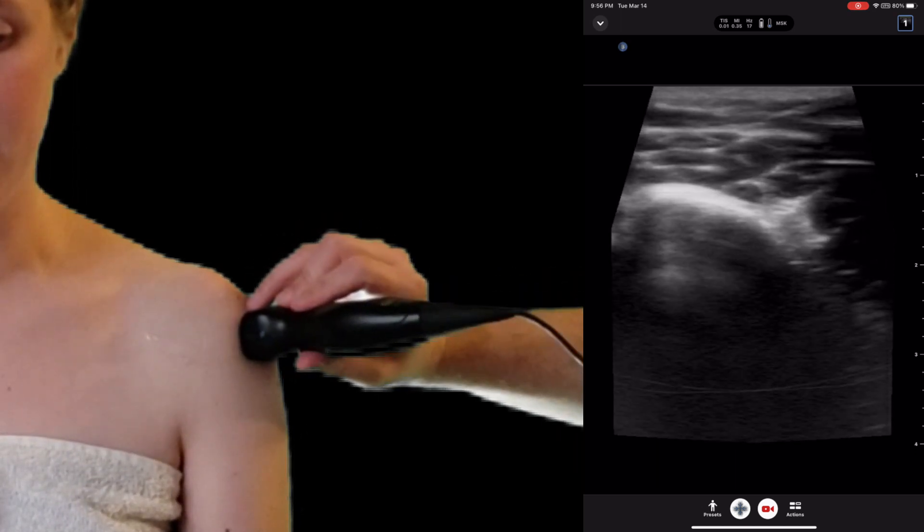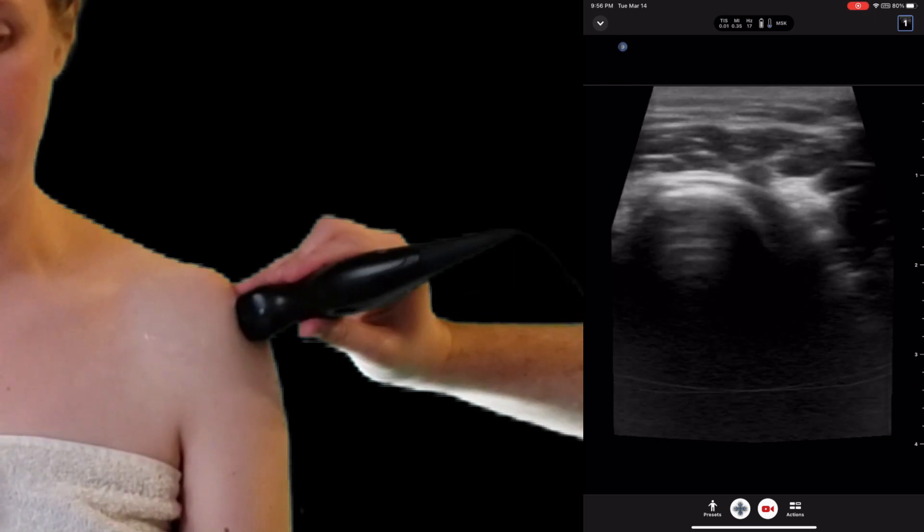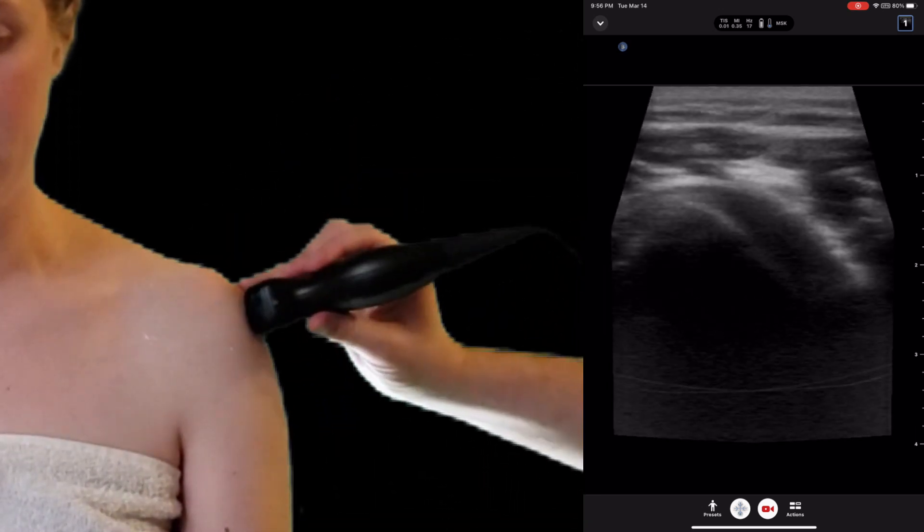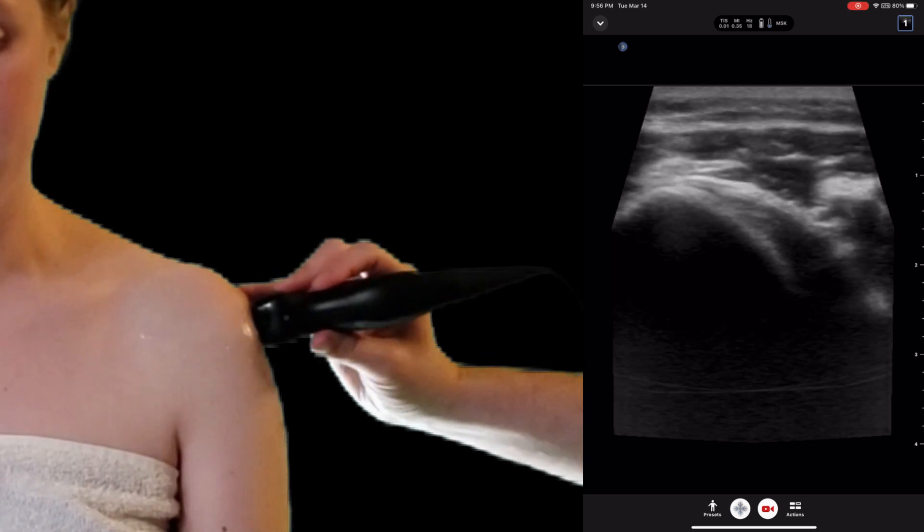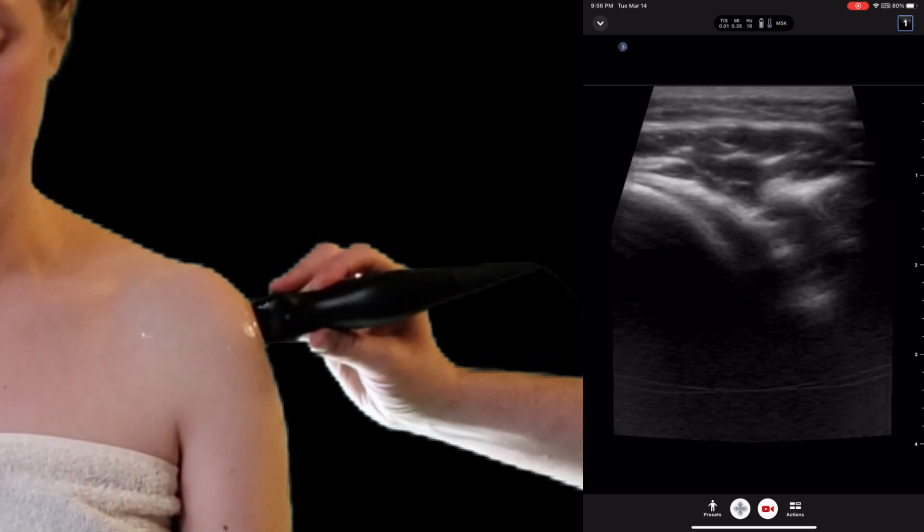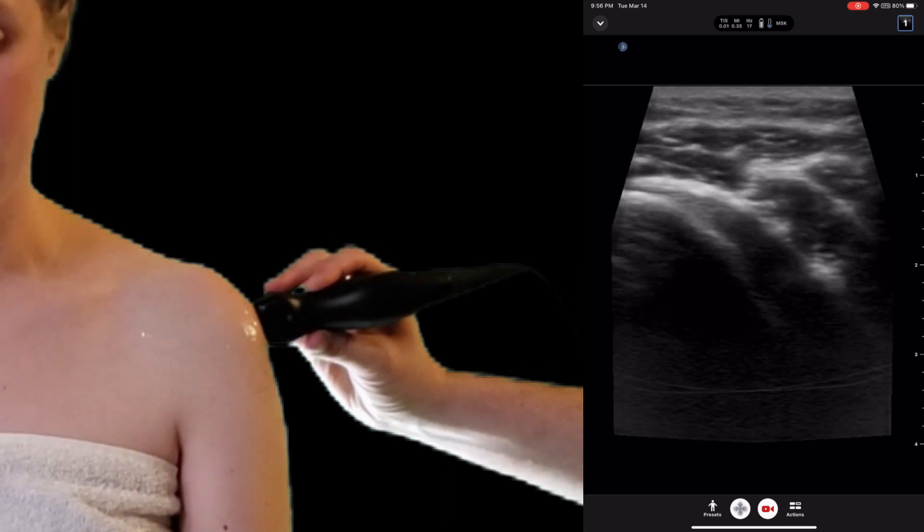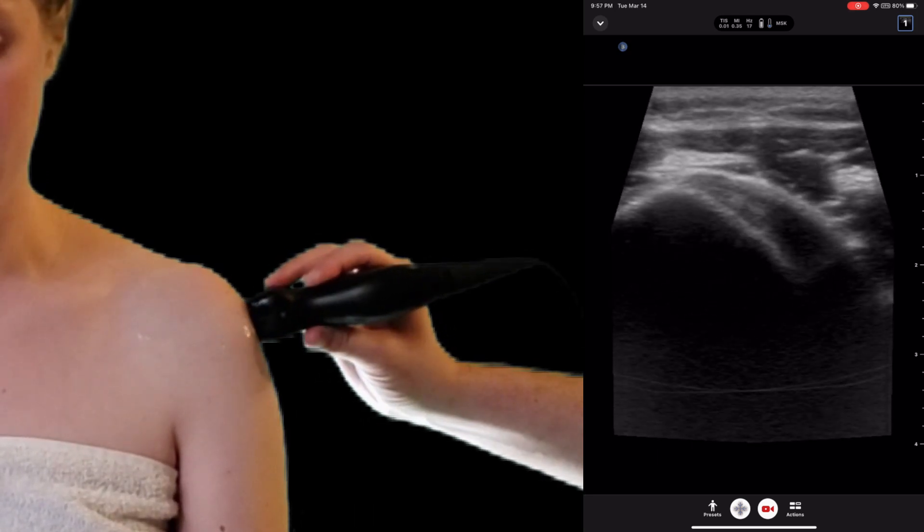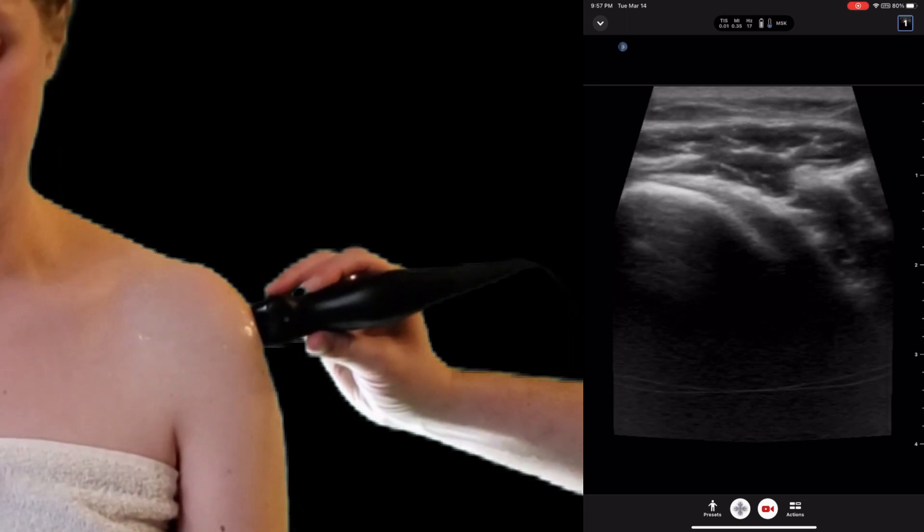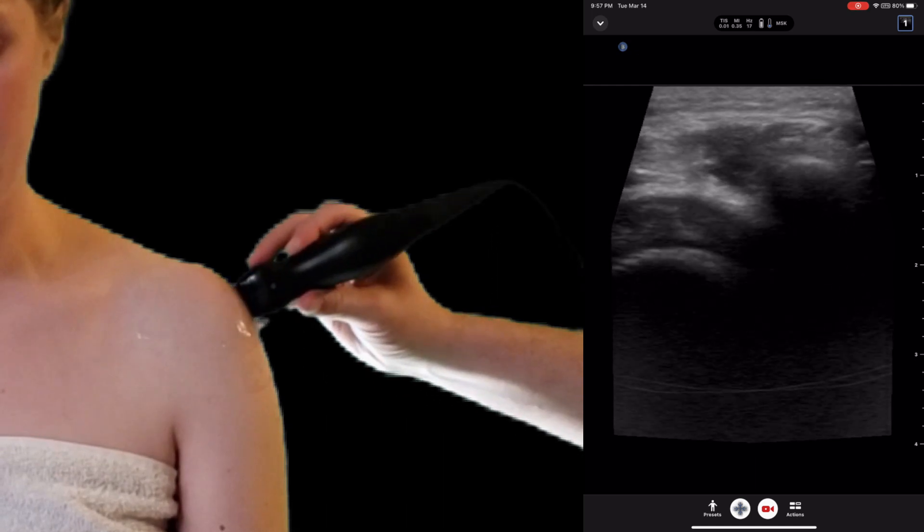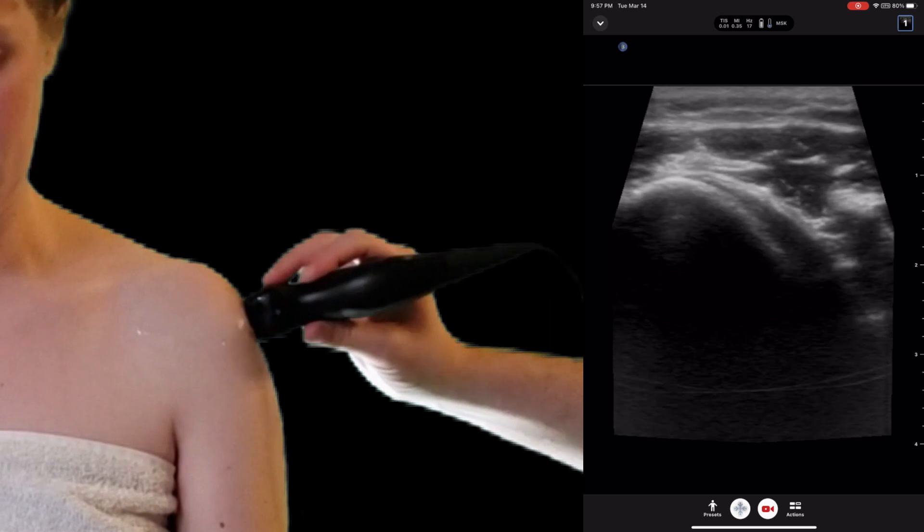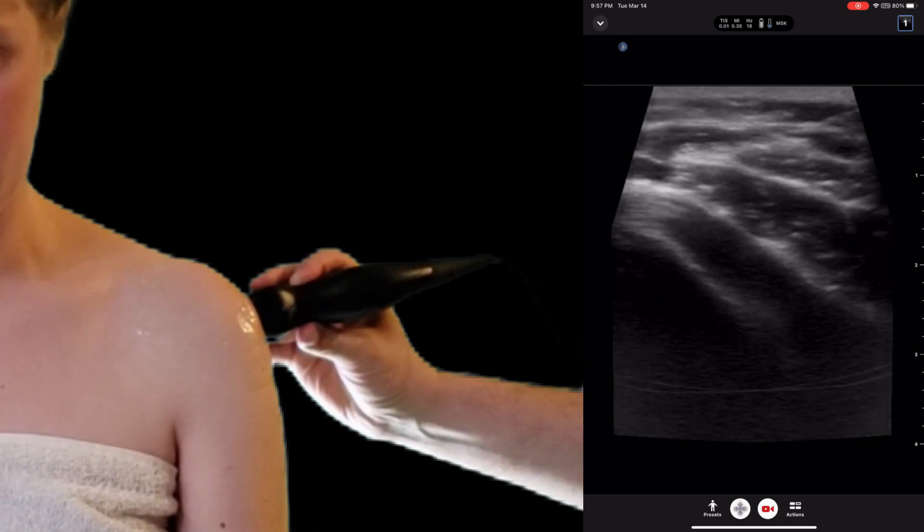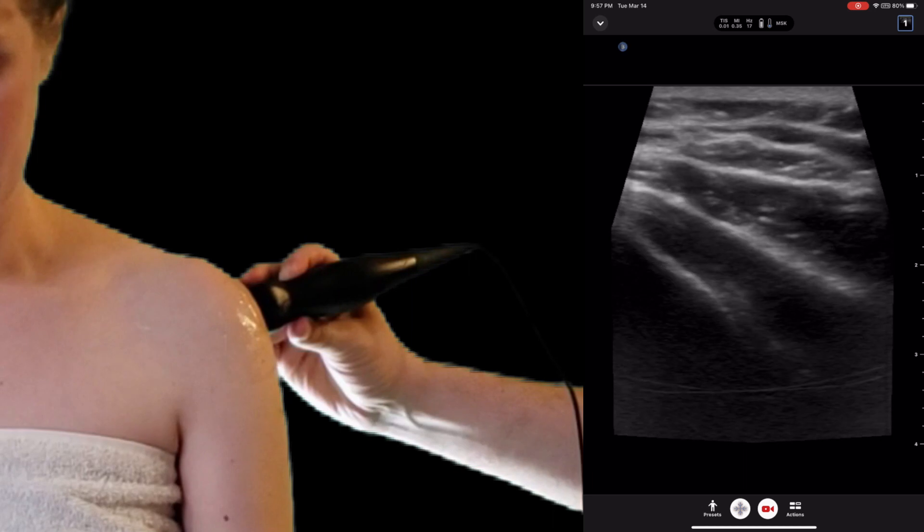The infraspinatus is going to be lateral and superior. And again, when evaluating the infraspinatus, we want to look at the inferior aspect all the way to the most anterior aspect, evaluating for any signs of tear or inconsistency within the rotator cuff tendon.